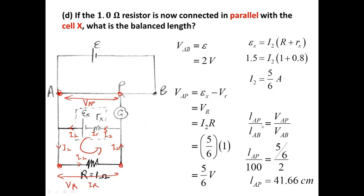Finally, we apply the ratio formula: length AP over length AB equals VAP over VAB. VAP is 5/6 and VAB is 2 volts. Then we get the balance length AP as 41.67 cm. That's it, thank you.